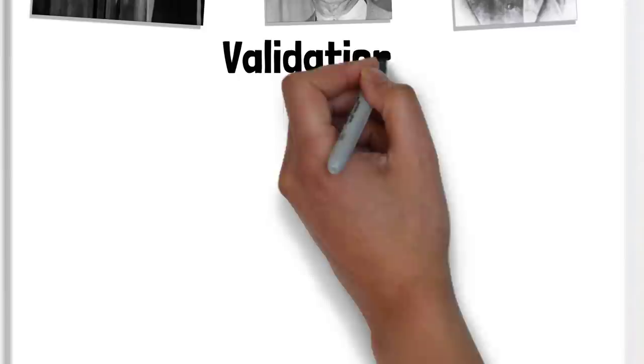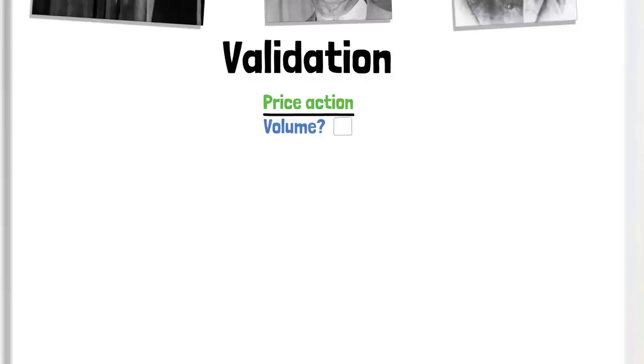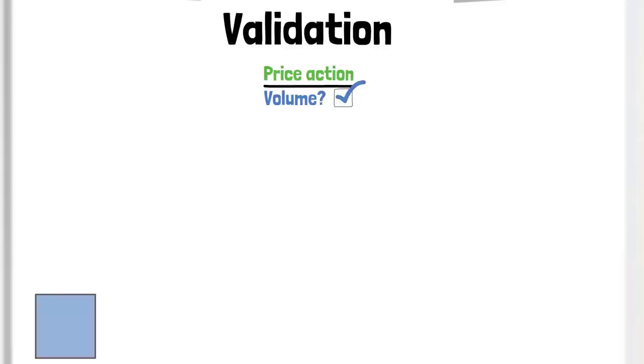With the relationship of volume and price in mind, let's look from a more practical perspective. The theme throughout the book is that of validation. Whatever price action is seen, it must be supported by volume. The validation process is analyzed candle by candle and has the same relevance regardless of time frame.